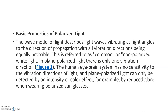Regarding the basic properties of polarized light: the wave model of light describes light waves vibrating at right angles to the direction of propagation, with all vibration directions being equally probable. This is non-polarized, or common white, light where all types of vibrations are equally present.